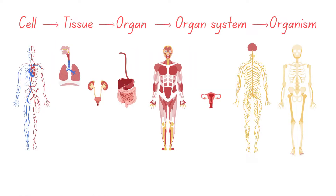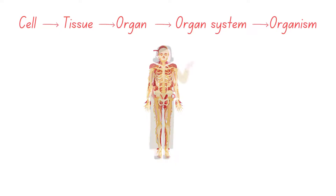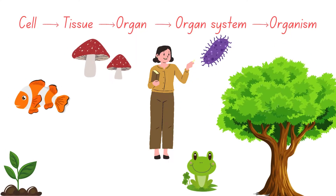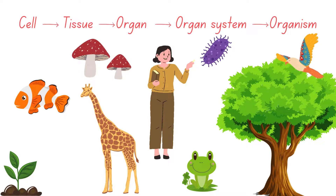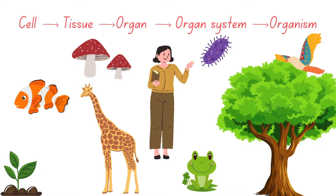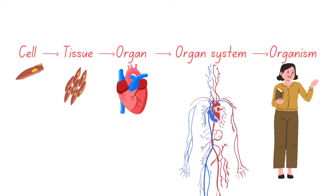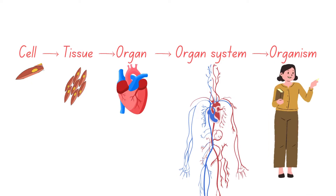Finally, when all the organ systems come together and interact, they form an organism. An organism is a living being that can function on its own — it could be as simple as a single-celled bacterium or as complex as a human being. Each level of organization, from organelles in the cell to specialized cells, tissues, organs, and entire organ systems, builds upon the previous one, creating the intricate and functional living systems we see in the natural world. And that's how life is organized, from the smallest organelle to the whole organism, with cell specialization playing a crucial role in the diversity of functions that life can perform. It's fascinating to think about how each level of organization is crucial to the functioning of life as we know it.